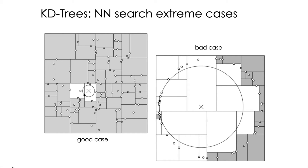Here we have two extreme cases. With this, I want to show that KD-trees do not perform the same every time — it will depend on the data. So this is a very good case: consider that the grayed areas are areas that we did not explore. If we want to find the neighbor of this point located at the cross, the distribution of data points allows us to prune most of the training cases and find the nearest neighbor very fast. So in this case, we save a lot of time using the KD-tree compared with the brute force.